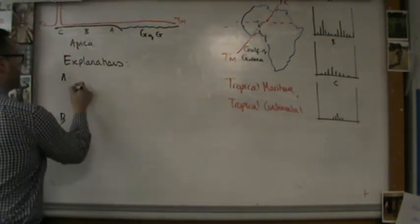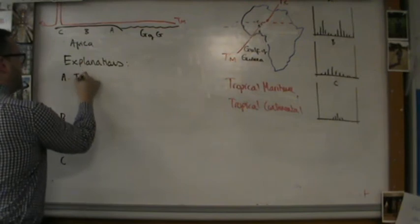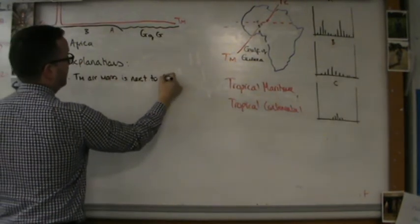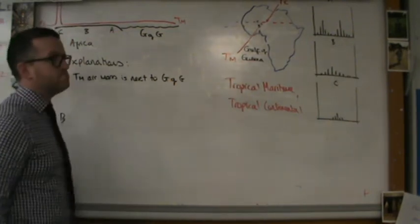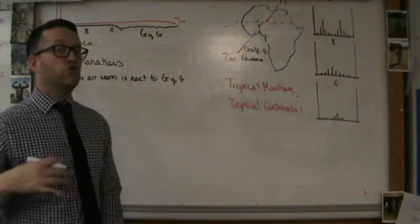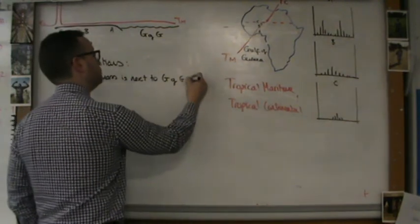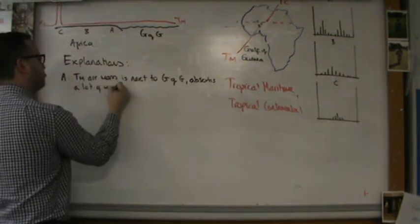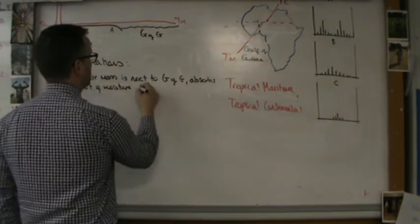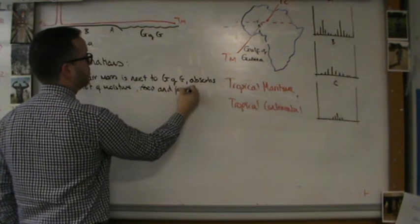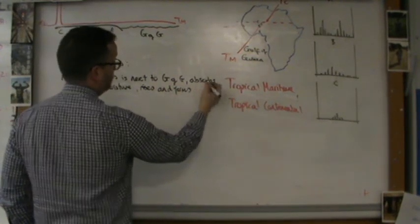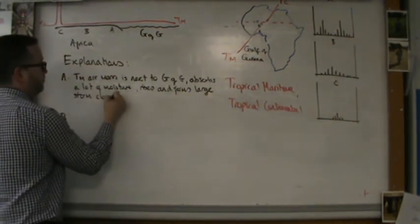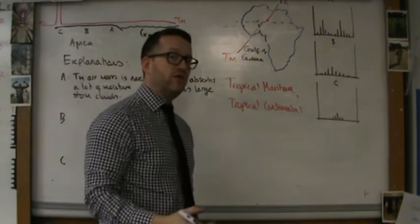Location A. The TM air mass is next to the Gulf of Guinea, which I'll just say G of G to save space. Because of this, it is able to absorb a lot of water, absorbs a lot of moisture, rises and forms big, large, massive storms, storm clouds. Those are called cumulonimbus clouds if you really want to impress the examiner.